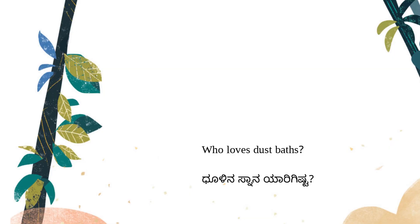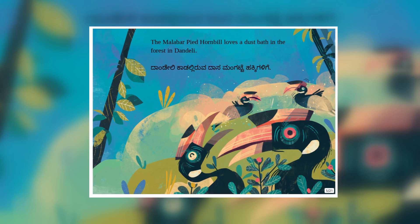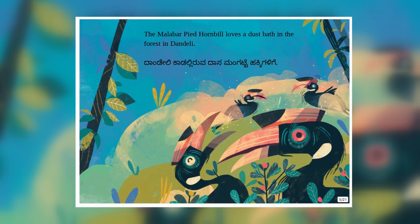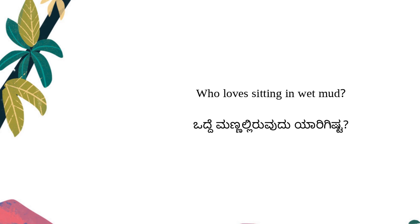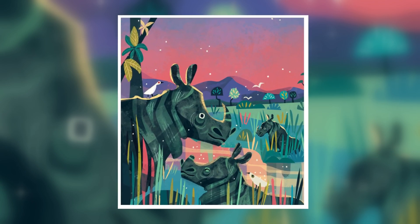They are a species of dolphins found in different parts of eastern India and they are freshwater dolphins. The next picture asks: who loves taking dust baths? The answer is the Malabar Pied Hornbill taking dust baths — they do that to kill parasites on their bodies, and this happens in Dandeli in Karnataka. Then: who loves sitting in wet mud? The answer is the Indian rhinoceros, who loves sitting in wet mud in Kaziranga forest in Assam.